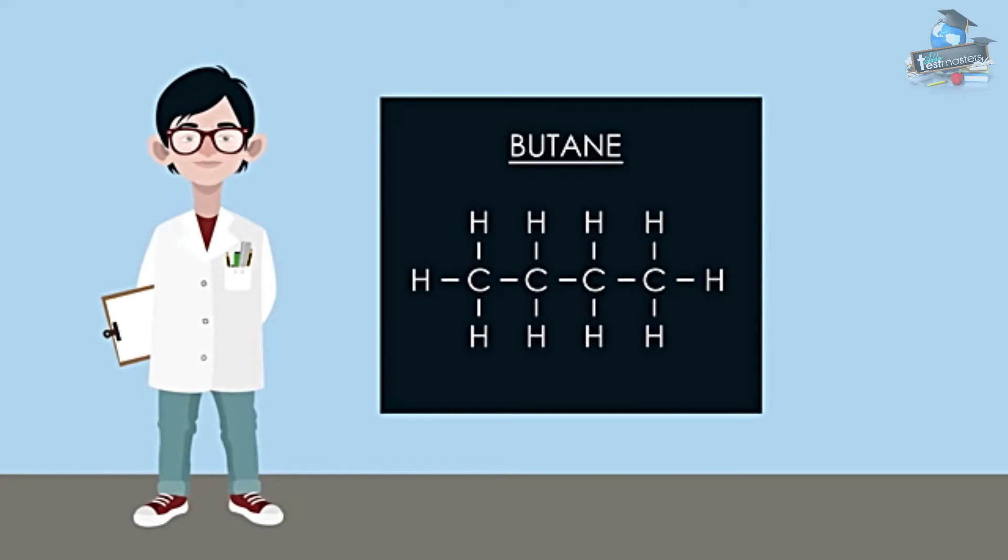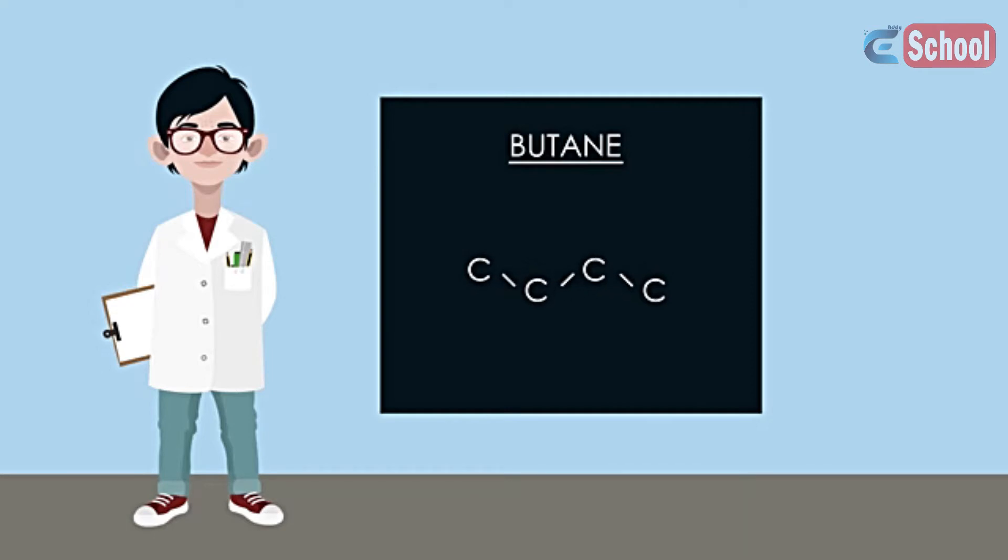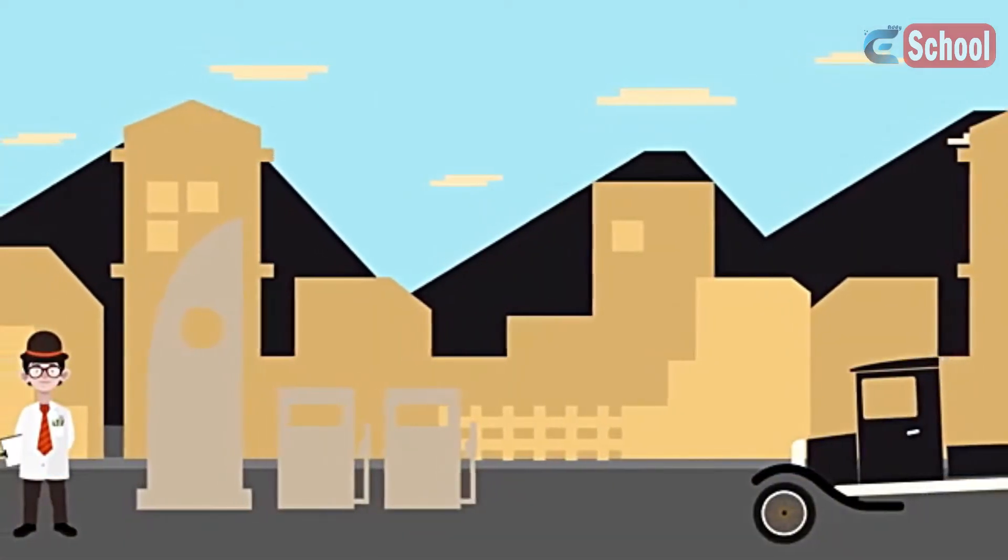To make it easier to draw the structural formula, we often omit hydrogen atoms and just show the bonds connecting the carbon atoms, bending the chain so you can see where the carbon atoms are.